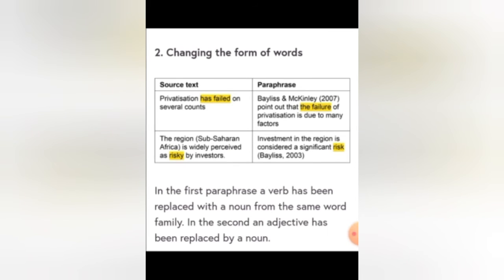The second technique is changing the form of words — that is, changing the structure of the word. For example, in the source text: 'a text that has failed on several counts' — you change the form of the words while preserving the meaning.